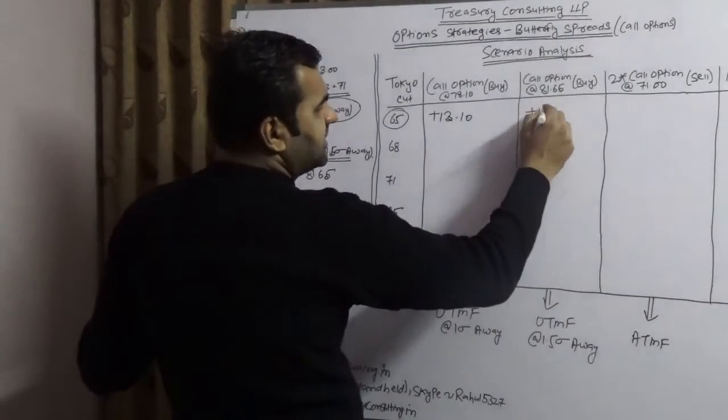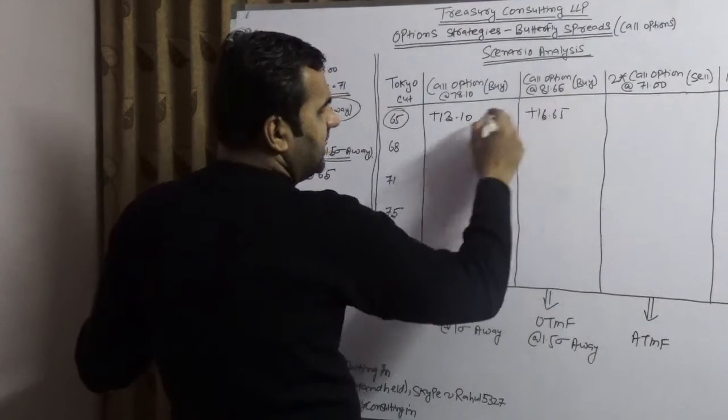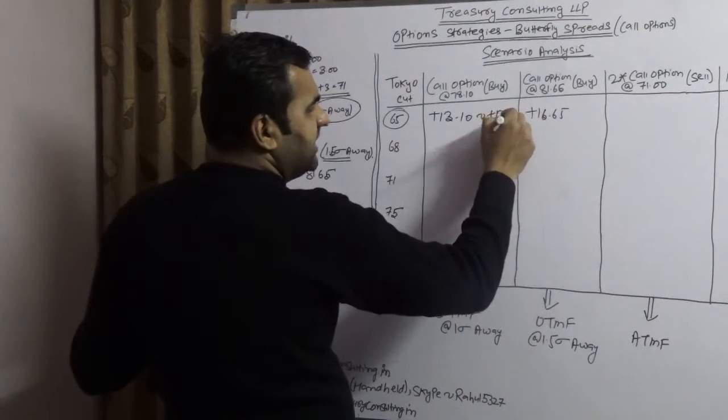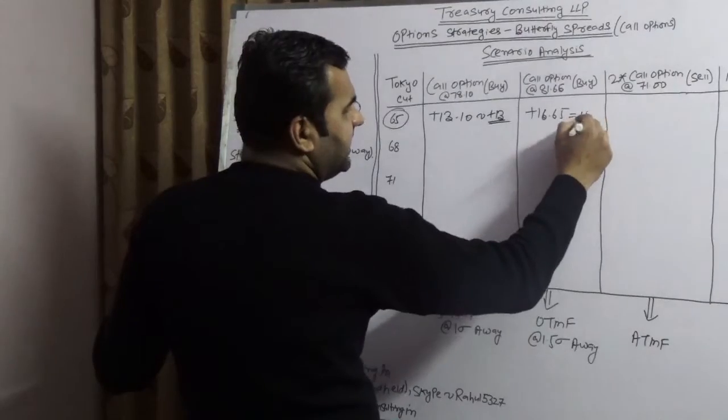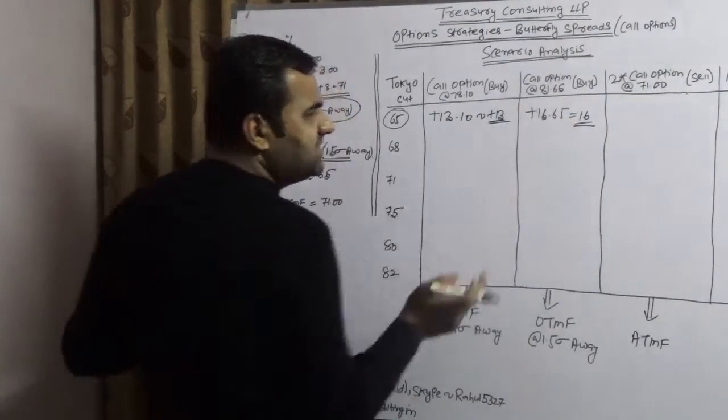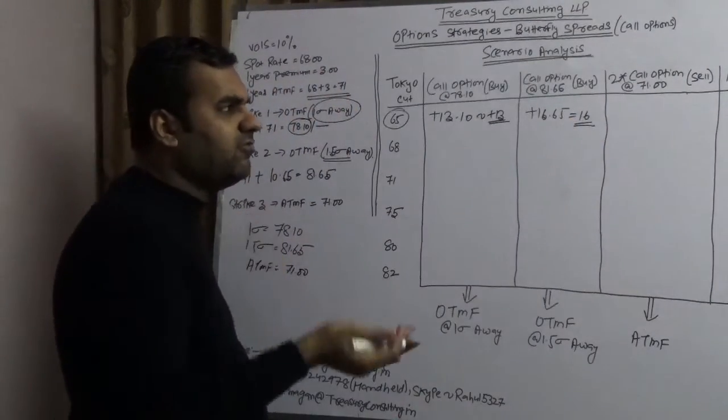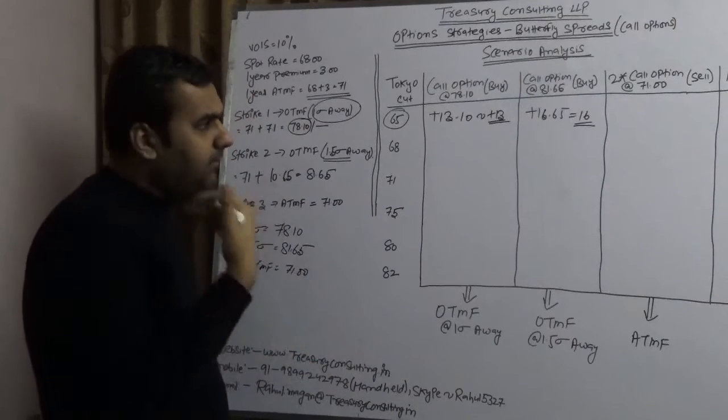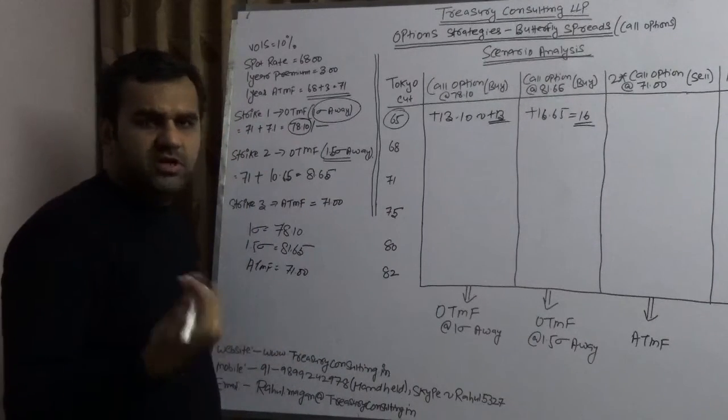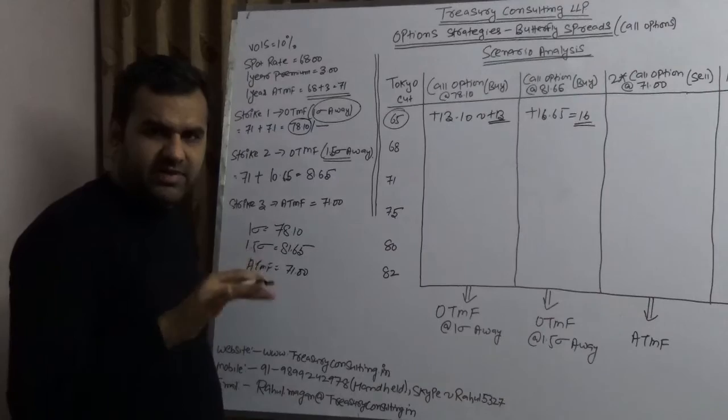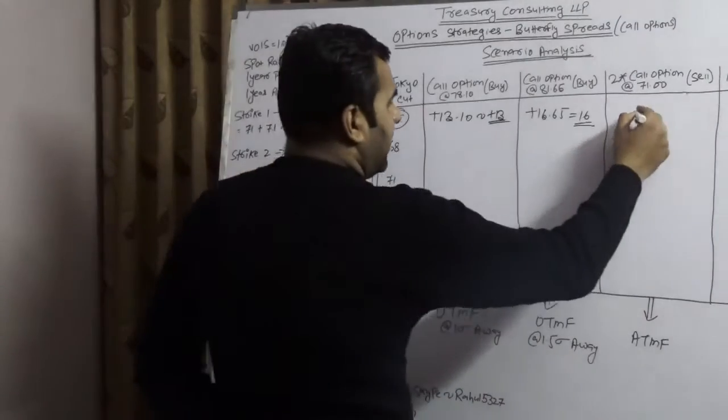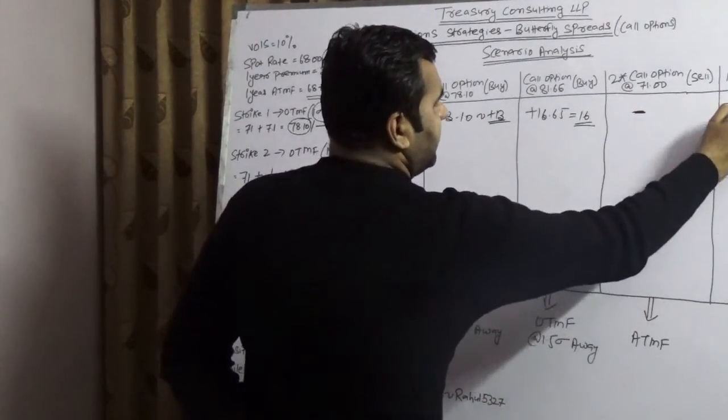In case of simplicity I will take 13, and in case of simplicity I take 16. When somebody has a right to buy from you at 71, market is at 65, would he buy from you? Definitely not. He will let it worthless. So again in both the cases you would have a gain of 29.